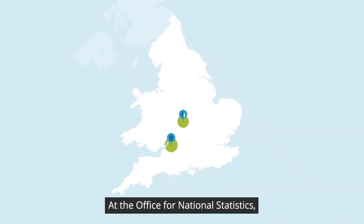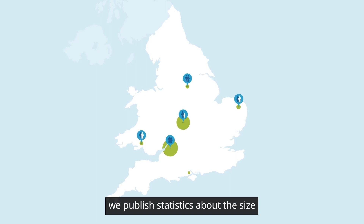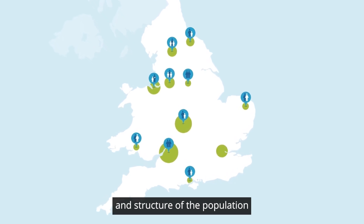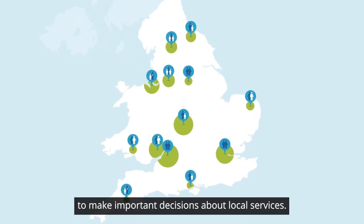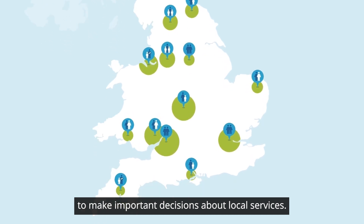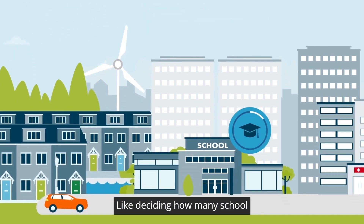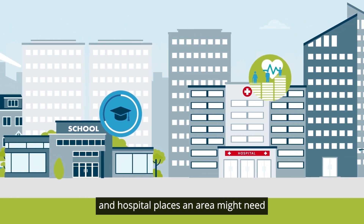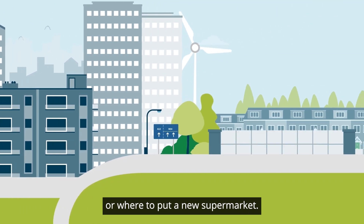At the Office for National Statistics, we publish statistics about the size and structure of the population that organisations use to make important decisions about local services, like deciding how many school and hospital places an area might need, or where to put a new supermarket.